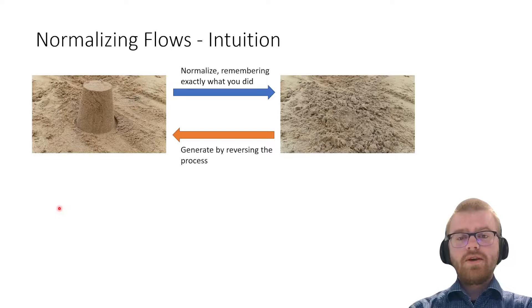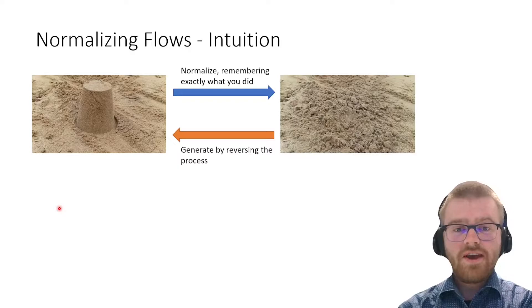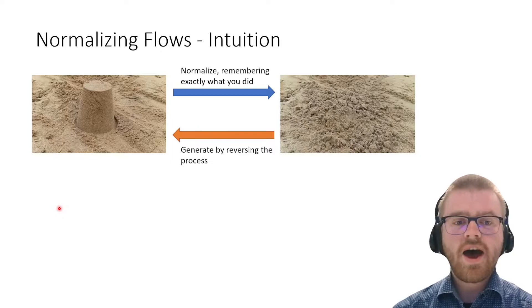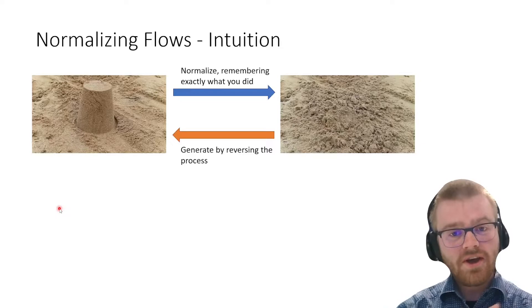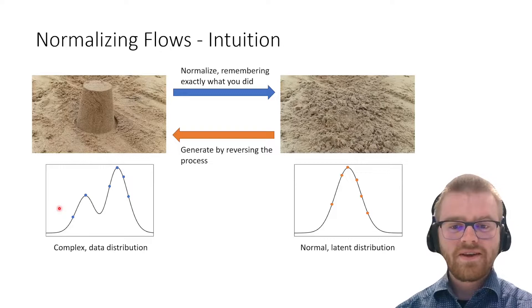Well, this is actually how normalizing flows work. What you do is start with fully created sandcastles and normalize them, destroying them basically. You remember exactly how you did that destruction, then generate by reversing the process. If you slightly change the normal sand on the right and reverse the process, you end up with a slightly different sandcastle on the left.